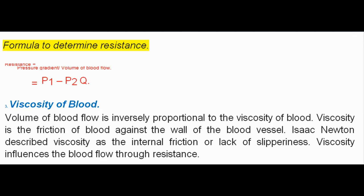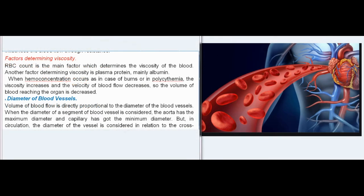Viscosity of blood: Volume of blood flow is inversely proportional to the viscosity of blood. Viscosity is the friction of blood against the wall of the blood vessel. Isaac Newton described viscosity as the internal friction or lack of slipperiness. Viscosity influences blood flow through resistance. Factors determining viscosity: RBC count is the main factor determining viscosity; another factor is plasma protein, mainly albumin. When hemoconcentration occurs, as in burns or polycythemia, viscosity increases and velocity of blood flow decreases, so the volume of blood reaching the organ is decreased.